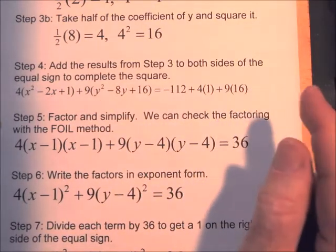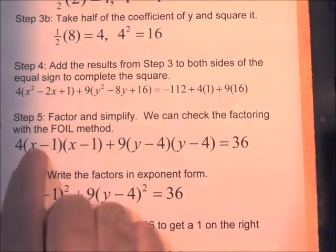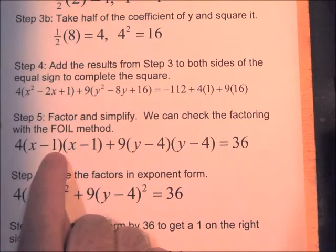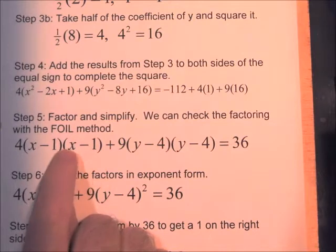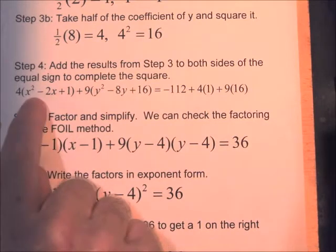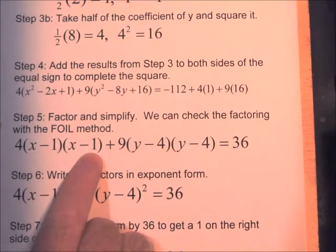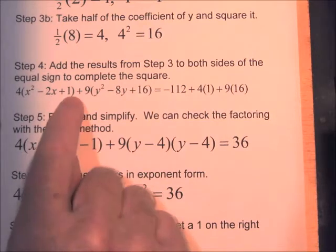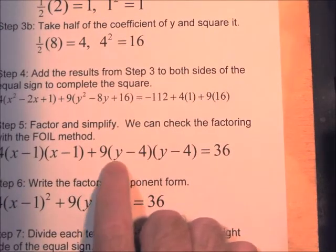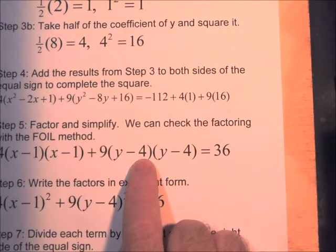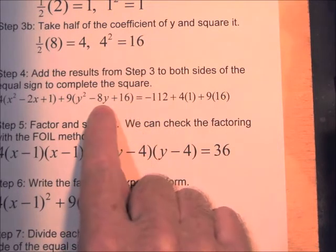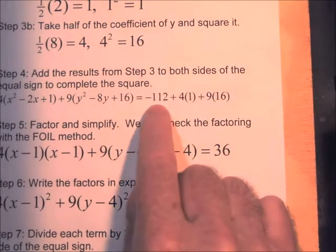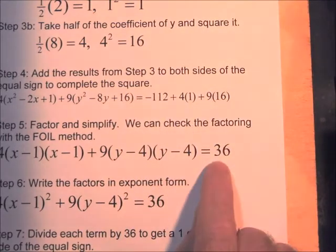Now we factor. For the x terms: we need two numbers that multiply to 1 and add to negative 2, which are negative 1 and negative 1. You can verify with FOIL: x times x is x squared, outer and inner products give negative 2x, and last times last gives 1. For the y terms: we need two numbers multiplying to 16 and adding to negative 8, which are negative 4 and negative 4. The right-side numbers compute to 36.